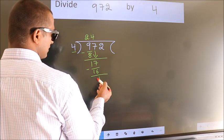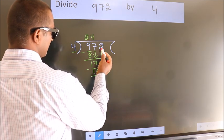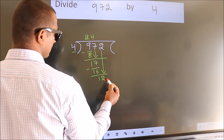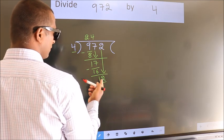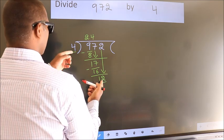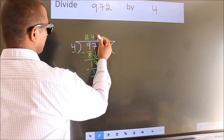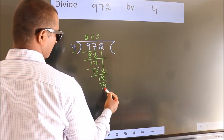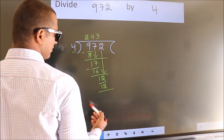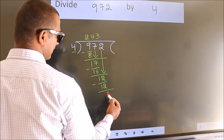After this bring down the beside number. So 2 down. So 12. When do we get 12? In 4 table. 4 3s 12. Now we subtract. We get 0.